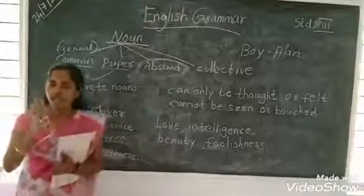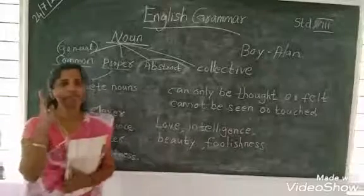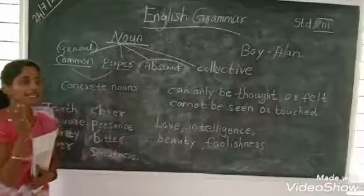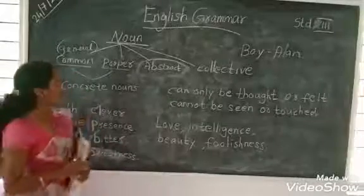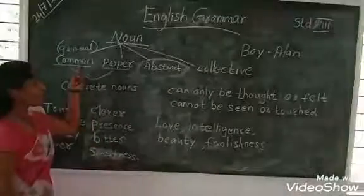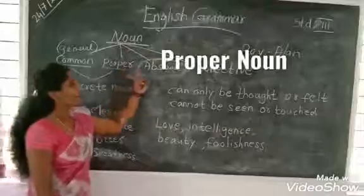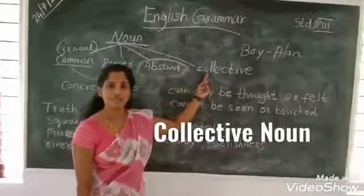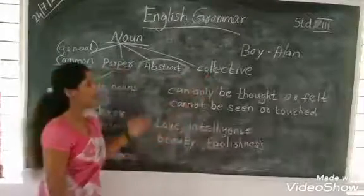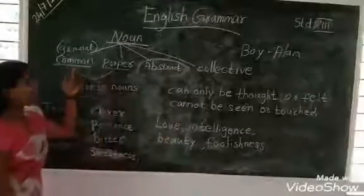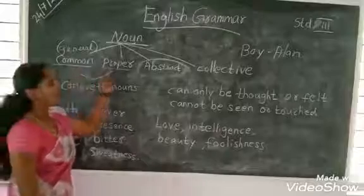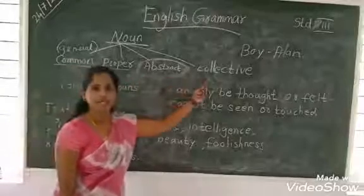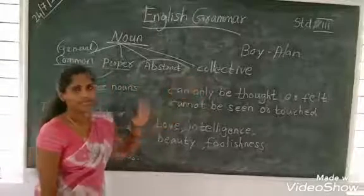There are four kinds of nouns. Four kinds of nouns: common noun, proper noun, abstract noun, and collective noun. Is it clear? Common noun, proper noun, abstract noun, and collective noun. Is it clear?